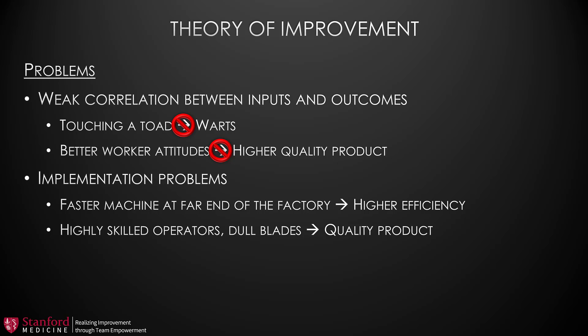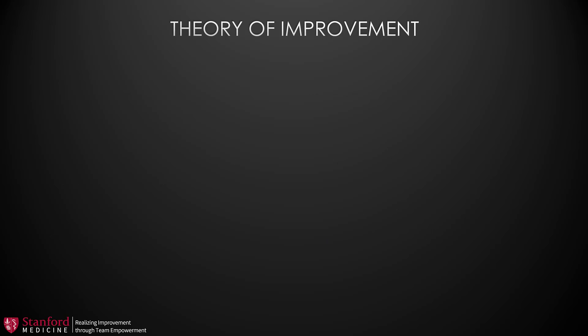For example, we might wish to increase our throughput by purchasing a faster machine. However, if we place the machine at the far end of the factory, transportation delays may negate our efficiency gains. Or, we might train our workers to be highly skilled in operating the machinery, but the quality of the product may still be compromised if the machine blades are dull. Therefore, because we don't know for sure whether it will work, we treat our improvement plan as a theory until proven otherwise. This starts out as a collection of untested ideas that may or may not work.